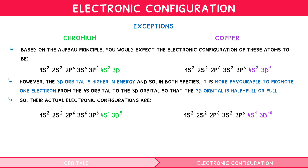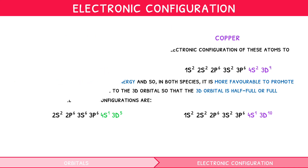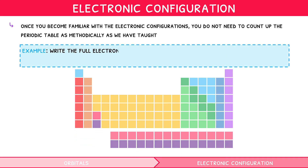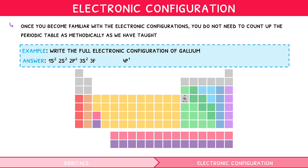Now that we have covered electronic configuration in depth, it is worth noting that once you become familiar with electronic configurations, you do not need to count up the periodic table as methodically as we have taught. You simply find the location of the element and you will know which orbital it relates to, then recall the preceding electronic configuration. For example, write the full electronic configuration of gallium. Gallium is the first element in the p block in period 4, so the electronic configuration ends with 4p¹. Just write the maximum filled orbitals of everything that comes before: 1s², 2s², 2p⁶, 3s², 3p⁶, 4s², 3d¹⁰, 4p¹. Easy.